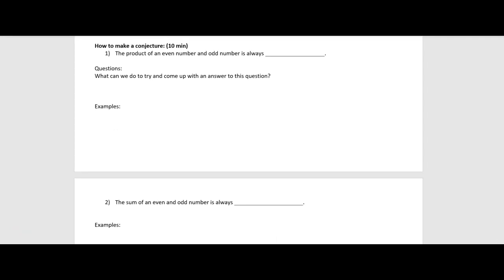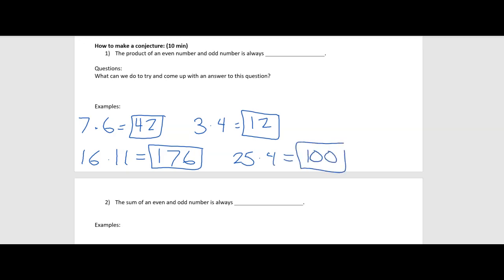So some examples for number one. The product means multiplication. So I'm just going to multiply an even and an odd number. So seven times six, that gives me 42. Let's do three times four, that gives me 12. Let's do 16 times 11. That's going to give me 176. And let's do one more. Let's do 25 times four. That gives me 100. So looking at all these boxed answers, what does the product seem to be? What are some answers numbers we could put? Well, they're all positive. That's true.